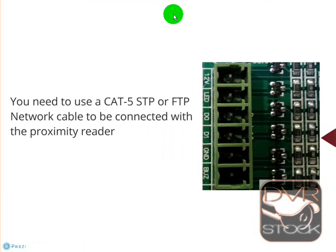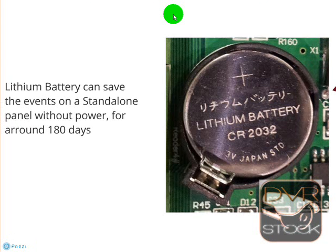For the reader connection we use Cat5 STP or FTP cable — recommended — or we can use the reader cable, which gives us 120 to 150 meters distance between the reader and the panel. We also use a battery, which will keep memory saved for up to 120 days when standalone or unpowered.